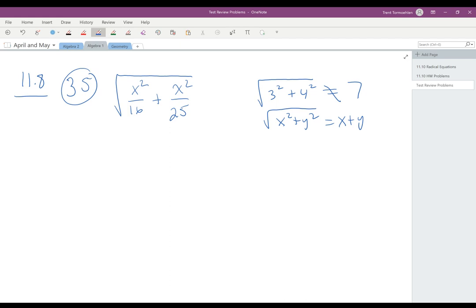And so what you're doing on a problem like this is you're saying, oh, that just equals x over 4 plus x over 5. And that is not the correct answer. So what you need to do instead is you need to add the fraction just like we added 3 squared plus 4 squared together.